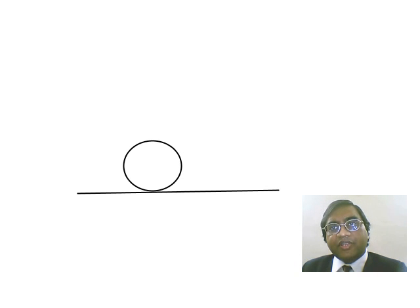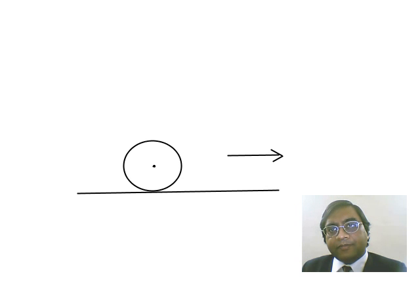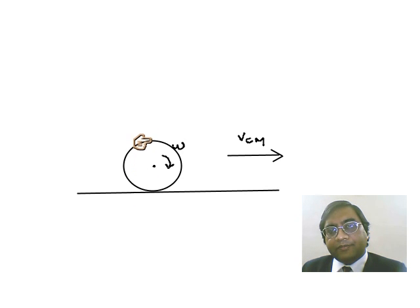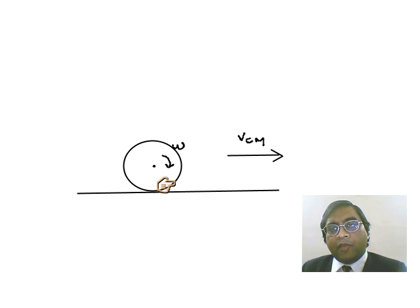Consider a ball which is moving towards the right side, and therefore its angular velocity must be like this. Normally we say that the normal reaction passes through the center of mass. However, in reality the front part of the ball presses the ground harder, shifting the normal reaction towards the right side.